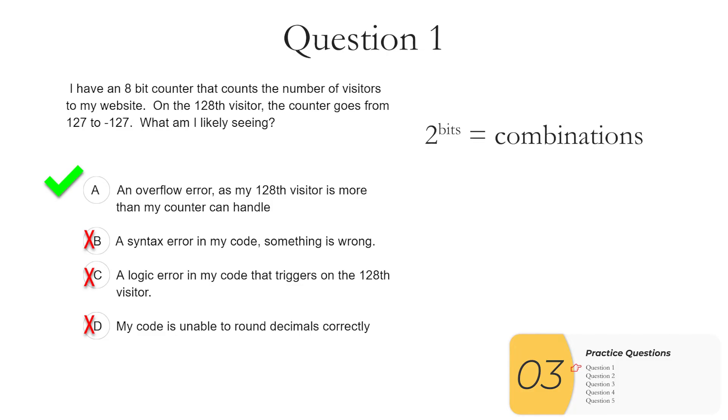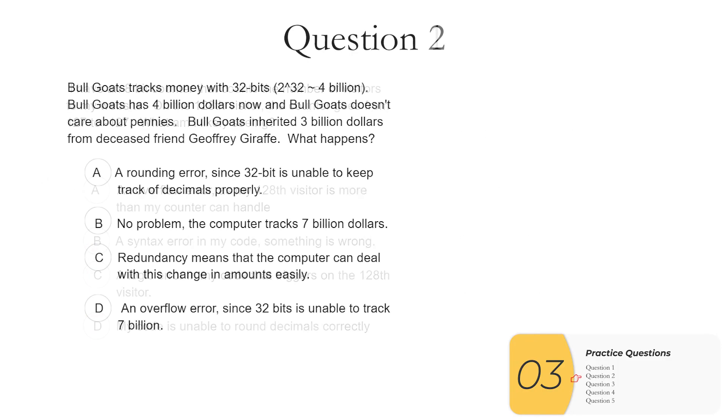Now, you might be asking me, but Dr. Wu, didn't you say that two to the number of bits is equal to the combinations and two to the eighth is 256? Why is that rolling over at 127? And the reason is, in this particular example, we're using one of those bits for the sign. You saw there's a plus or minus 127. So one of those bits is used for the sign, which means that I really only have seven bits for numbers. And two to the seventh is equal to 128, which, if I'm counting numbers, allows me to go from zero to 127. So anyway, the answer here is A.